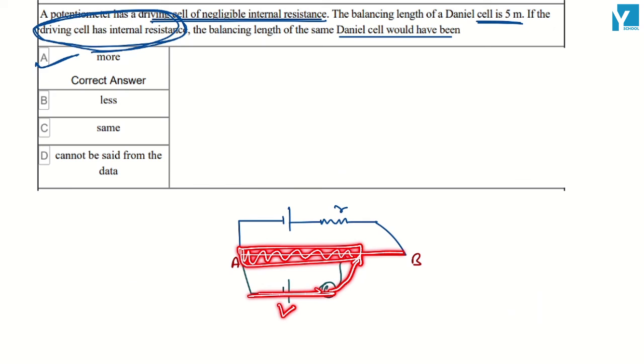The voltage drop should be equal to the battery voltage. So the balancing length for this cell will be higher than before. All right?